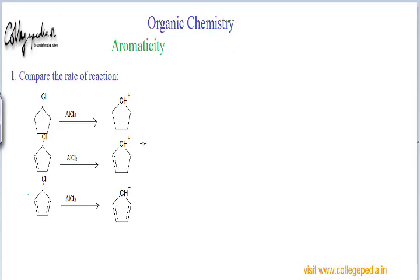In the first carbocation there is only hyperconjugation from 2 alpha carbons. In the second carbocation there is both resonance and hyperconjugation. In the third carbocation, there is resonance with 2 pi bonds — and the obvious temptation is to say the third case has the highest rate. But this is a wrong answer, because we have been misled by anti-aromaticity. Even when there is resonance, if that resonance leads to anti-aromaticity, there is a huge amount of inherent instability in that molecule. Resonance generally brings stability, but when there is anti-aromaticity, resonance brings instability instead.